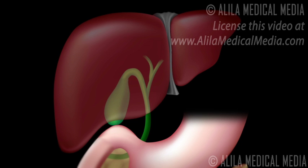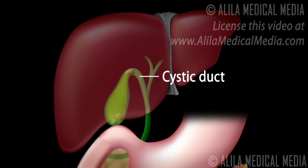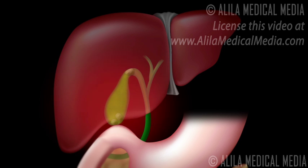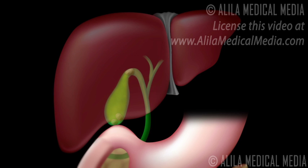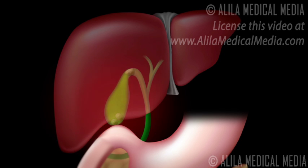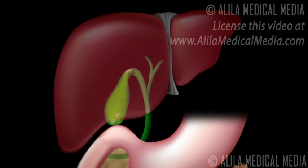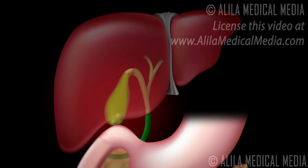Gallstones are hard masses formed in the gallbladder. Gallstones may cause obstruction of the cystic duct and excruciating pain when the gallbladder contracts. This usually happens after a fatty meal and is commonly referred to as a gallbladder attack. Blockage of the cystic duct is a common complication caused by gallstones.